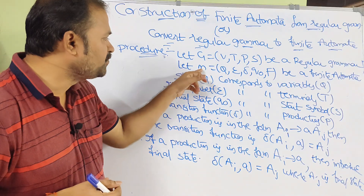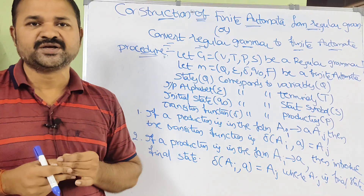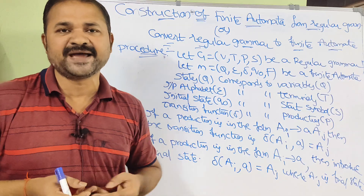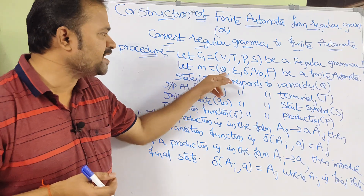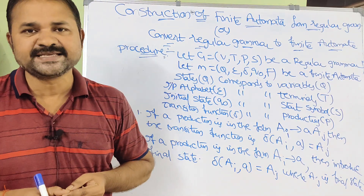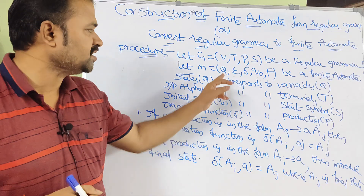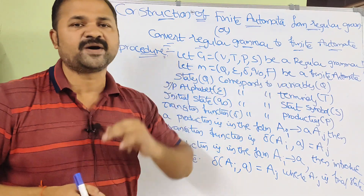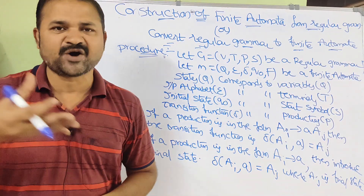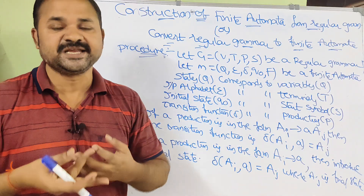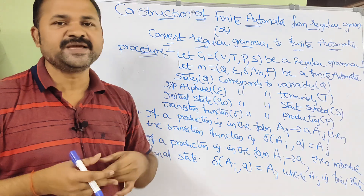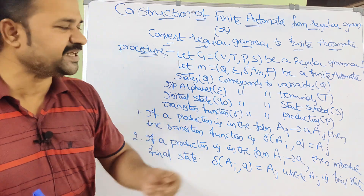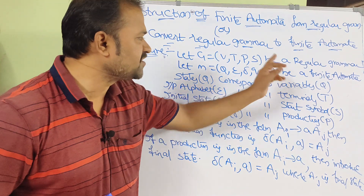The output is finite automata, denoted M. Finite automata is represented with five tuples: M = (Q, σ, δ, Q₀, F), where Q means set of states, σ means input alphabet, δ means transition function, Q₀ means initial state, and F is the final state.